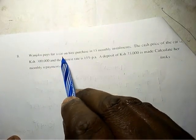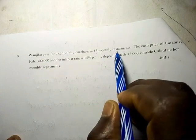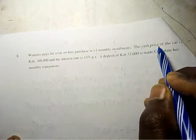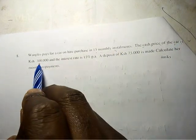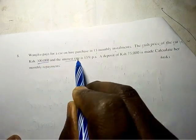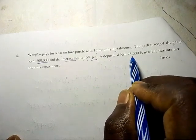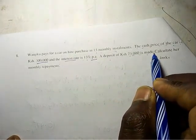Wanchiko pays for a car on hire purchase in 15 monthly installments. The cash price of the car is 300,000 and the interest rate is 15% per annum. A deposit of Kenya shilling 75,000 is made. Calculate her monthly repayments.